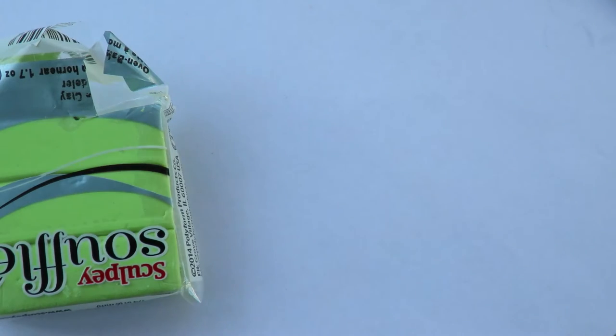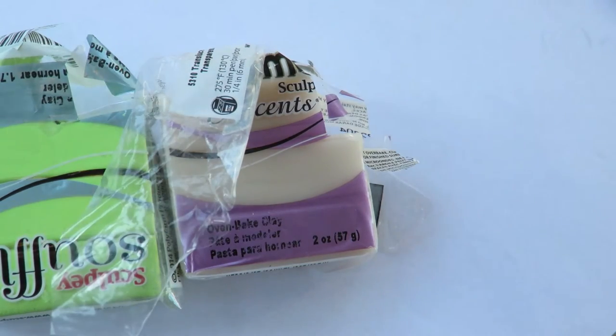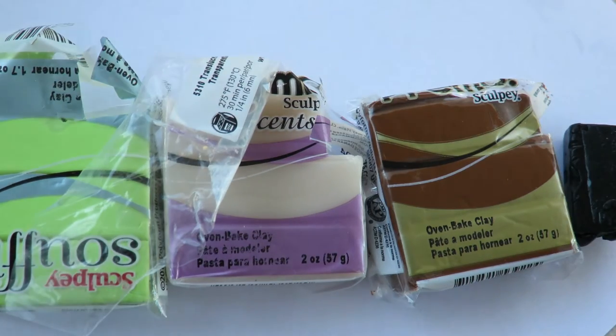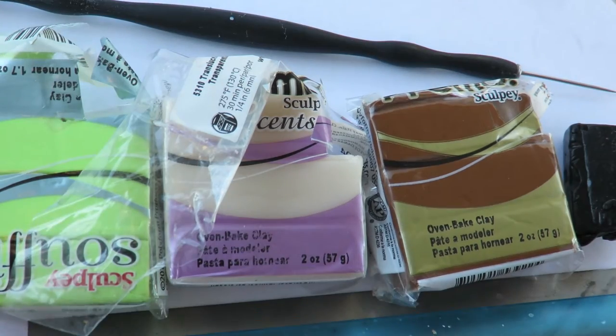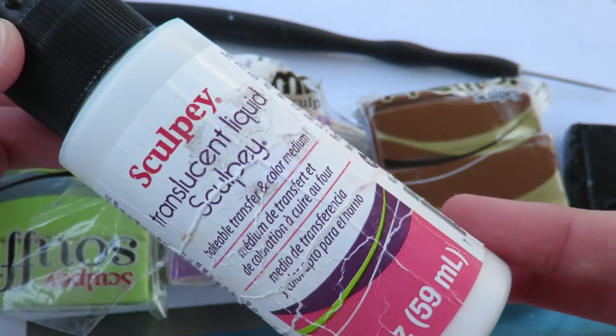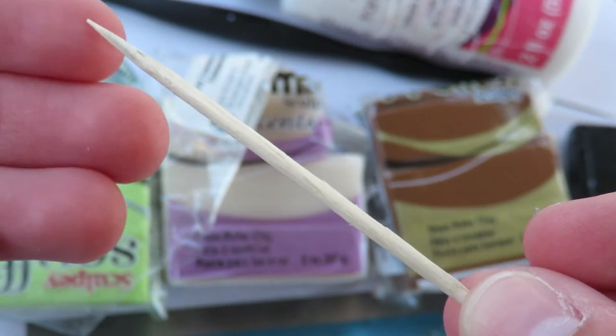To make this charm, you will need your apple colored clay, and I'm using green, translucent, a caramely colored clay, black clay for the face, a needle tool, a blade, some translucent liquid Sculpey, and a toothpick.